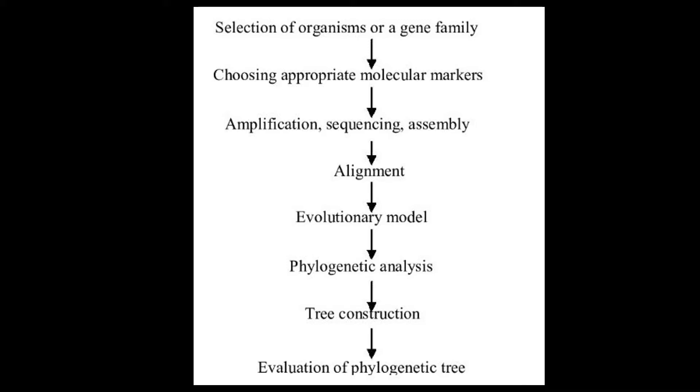We first select the organisms or a gene family, then we choose appropriate molecular markers to amplify, sequence, and assemble. Finally, we align them and prepare an evolutionary model. We perform the phylogenetic analysis and construct the phylogenetic tree, and finally we evaluate the phylogenetic tree. It is a combination of experiments we do in the lab and in silico, so both are combined so that we can perform the phylogenetic analysis in the most robust manner possible.